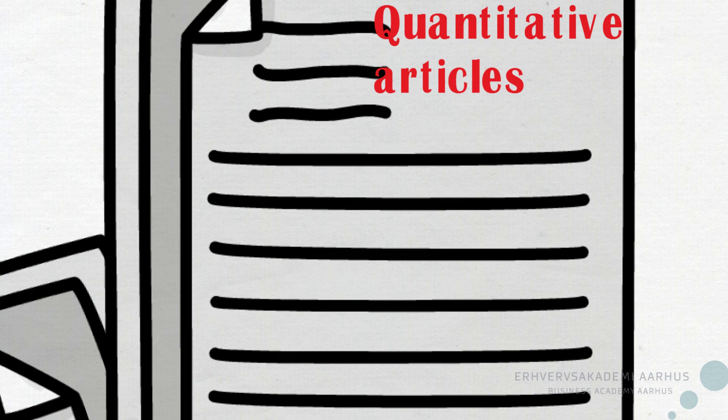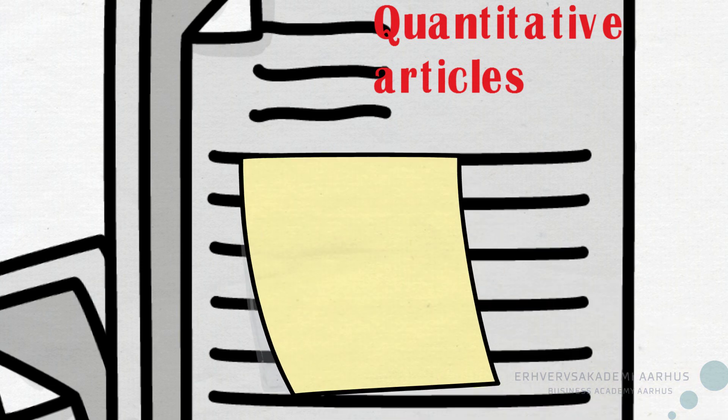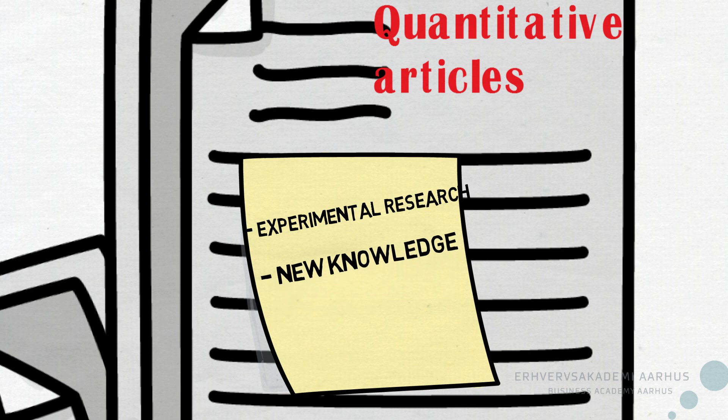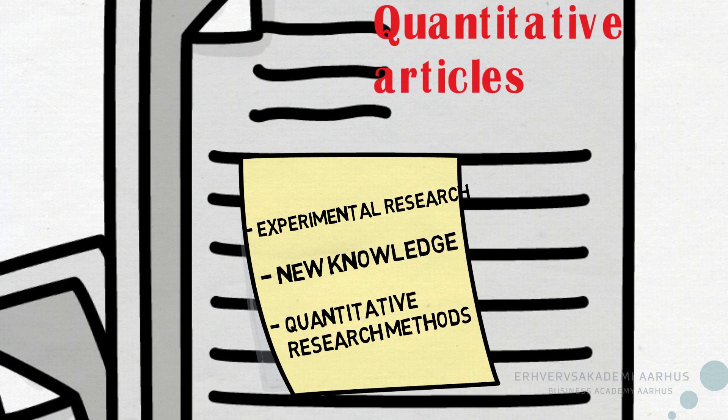Quantitative articles describe experimental research by which new knowledge is gained on the basis of quantitative research methods — which is everything that can be counted or measured: questionnaires, readings, etc. These are methods where the scientist doesn't interpret data. Usually, a statistical analysis is used for confirming or denying hypotheses.